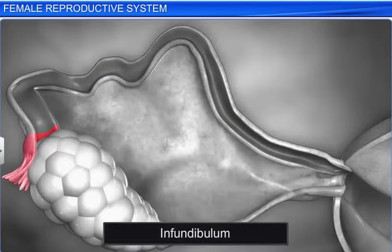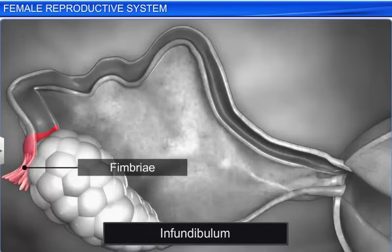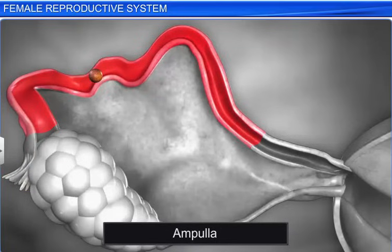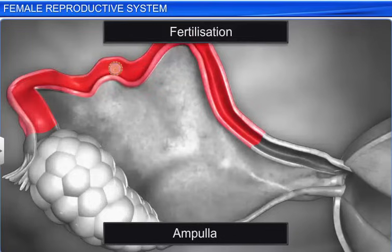The infundibulum is a dilated funnel close to the ovary. Its edges are surrounded by finger-like projections called the fimbriae. They help collect and push the ovum into the oviduct after ovulation. The ampulla is the swollen and curved part behind the infundibulum, and fertilization of the ovum takes place in this part.